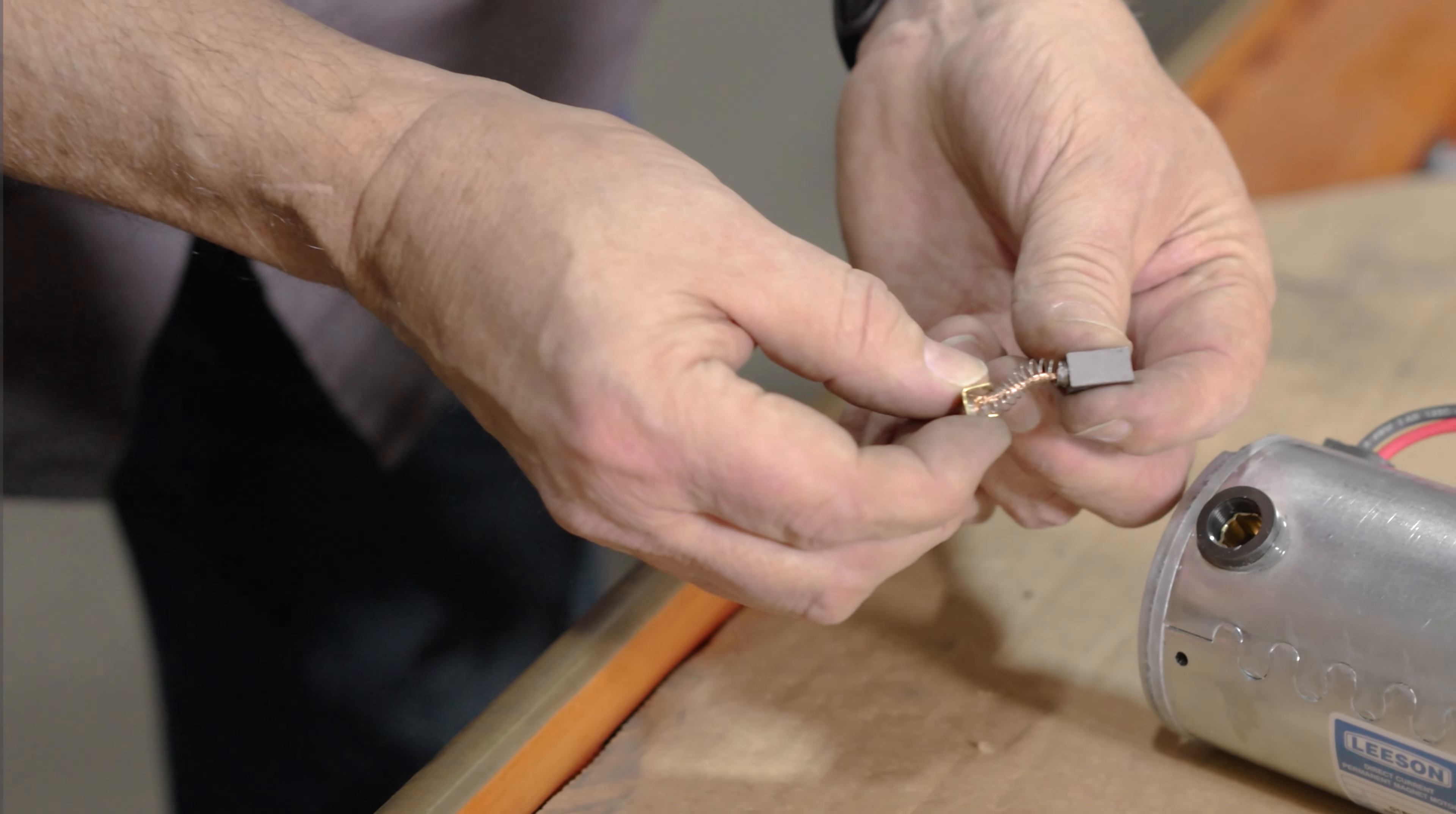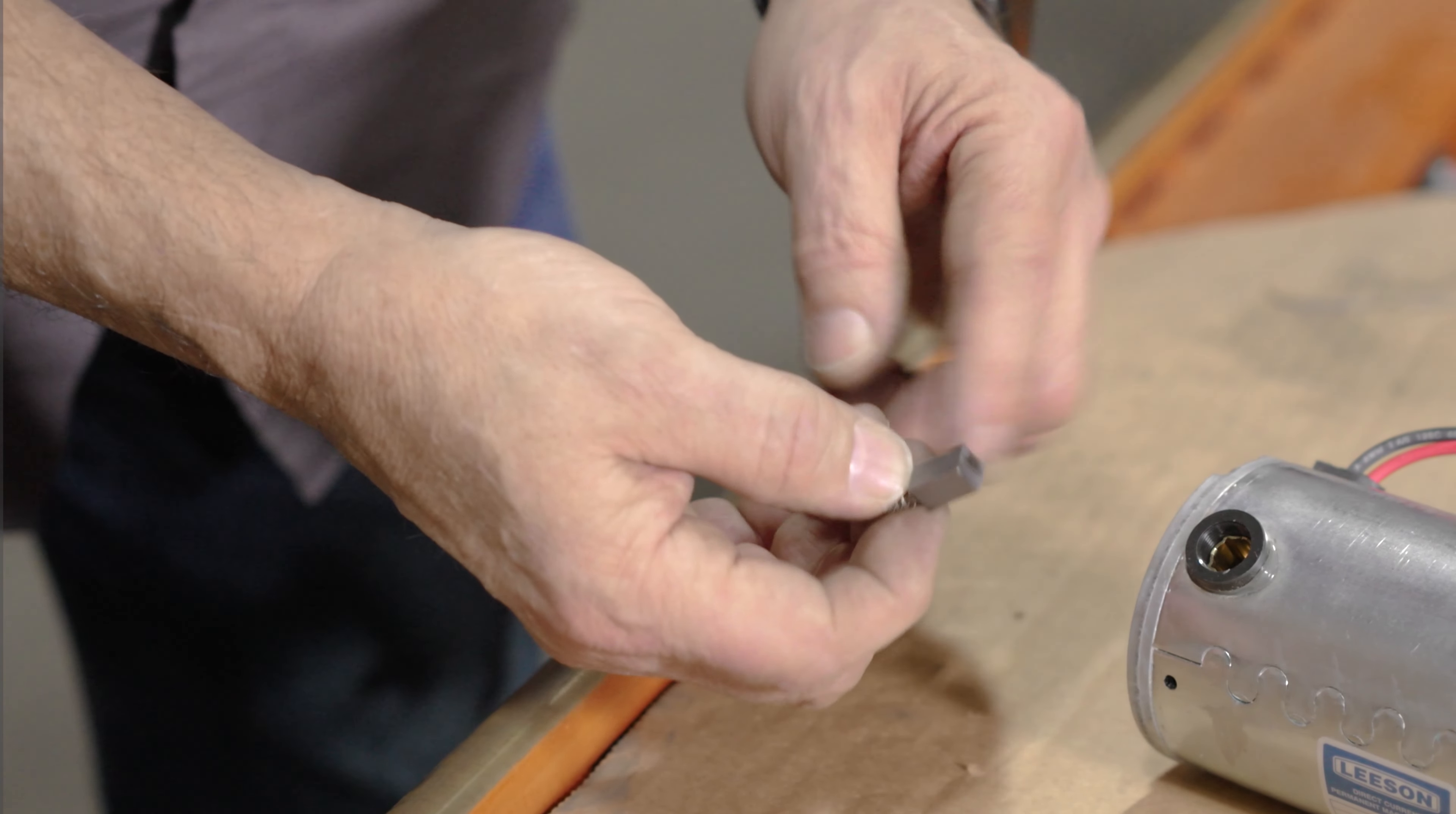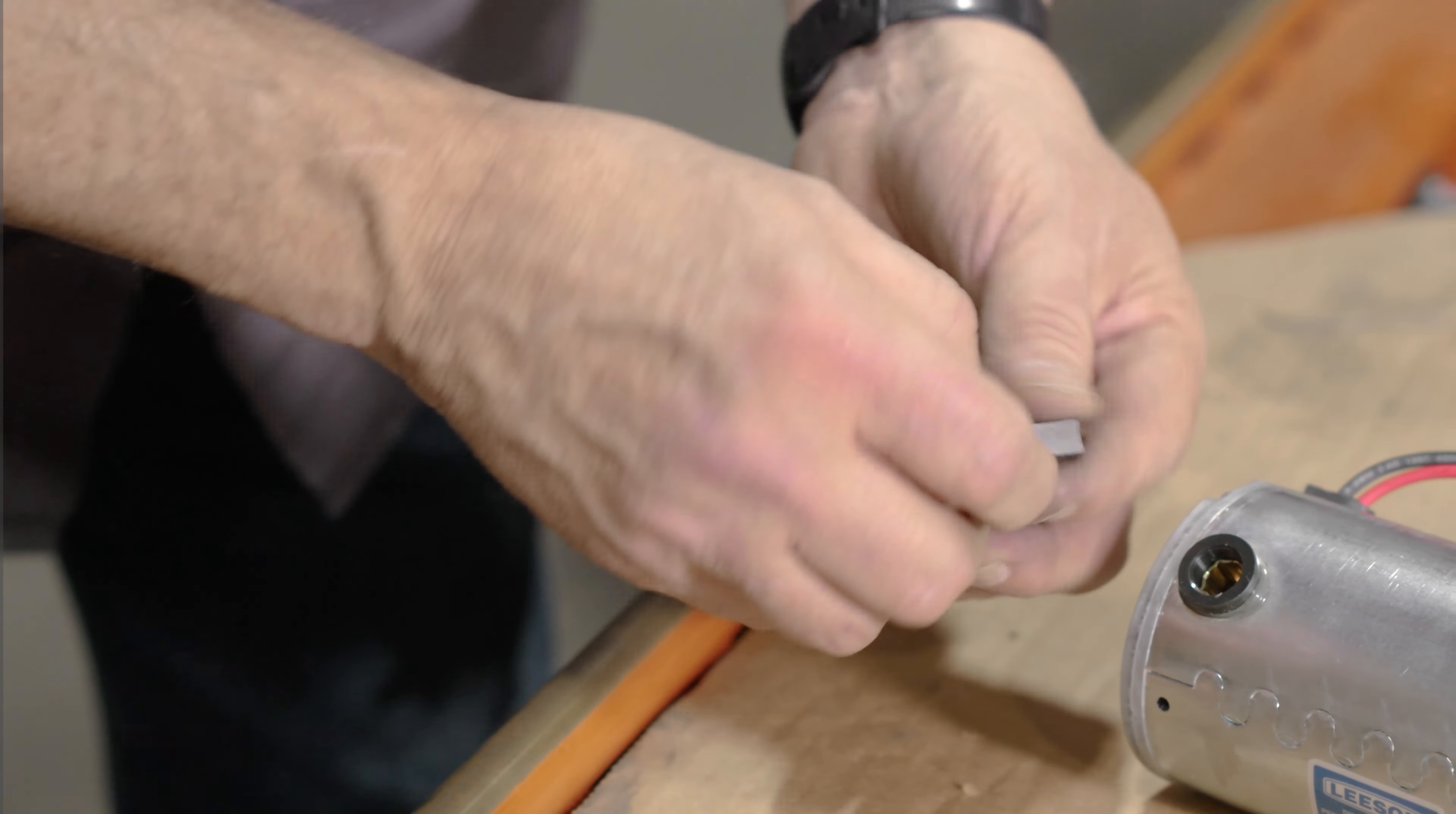That's what a new brush looks like. When you install the brush, it could have a flat end to it, but used brushes will have a curvature the same as the armature.